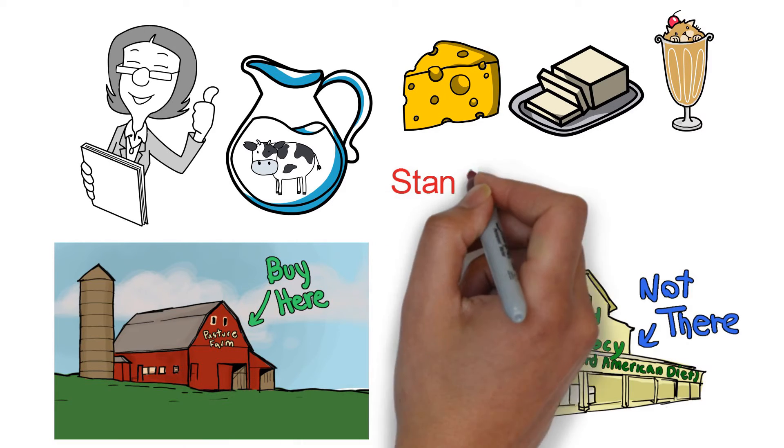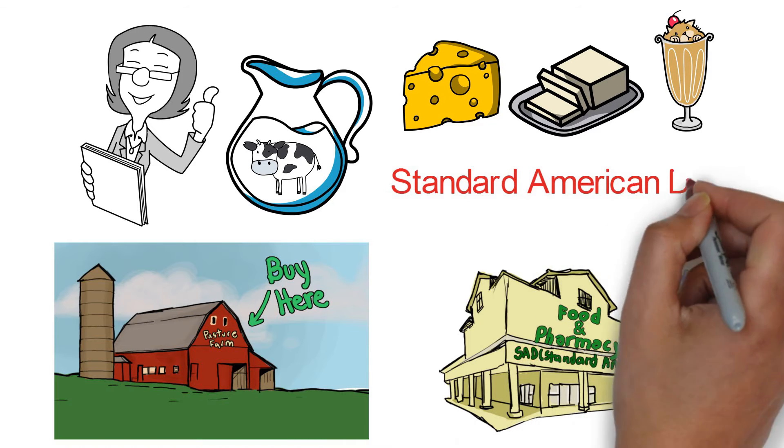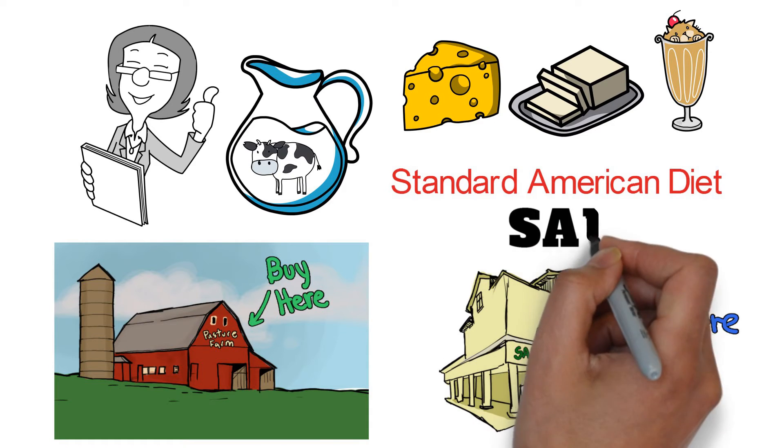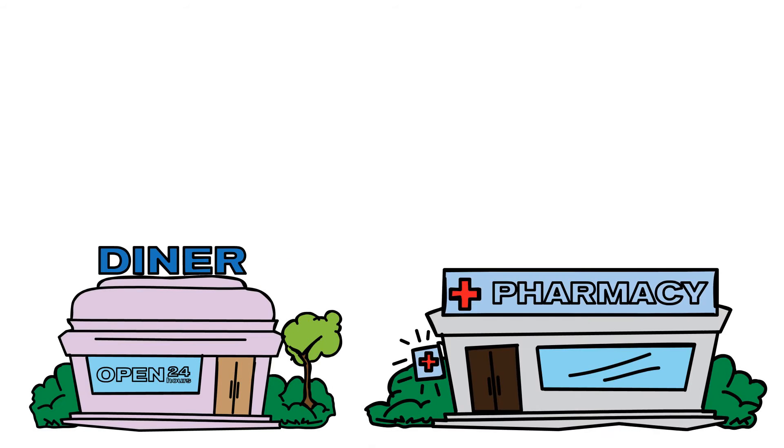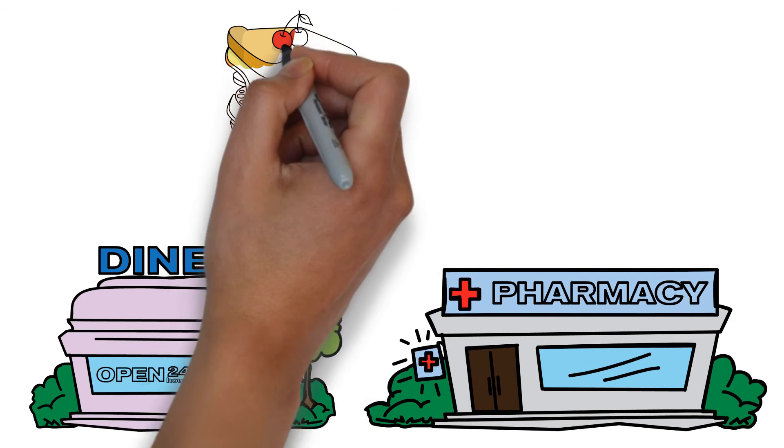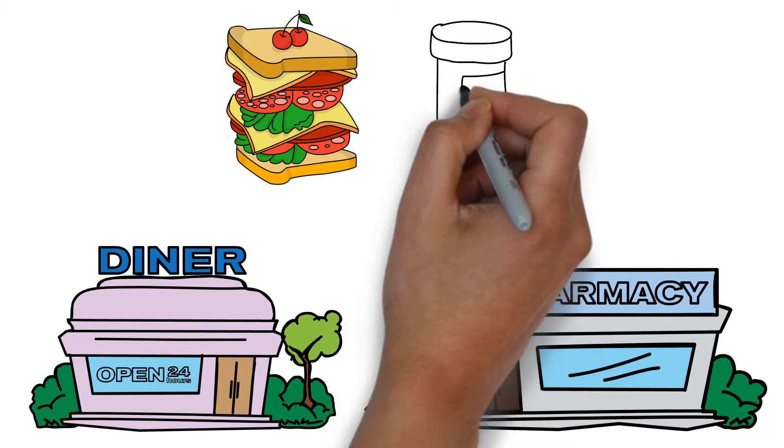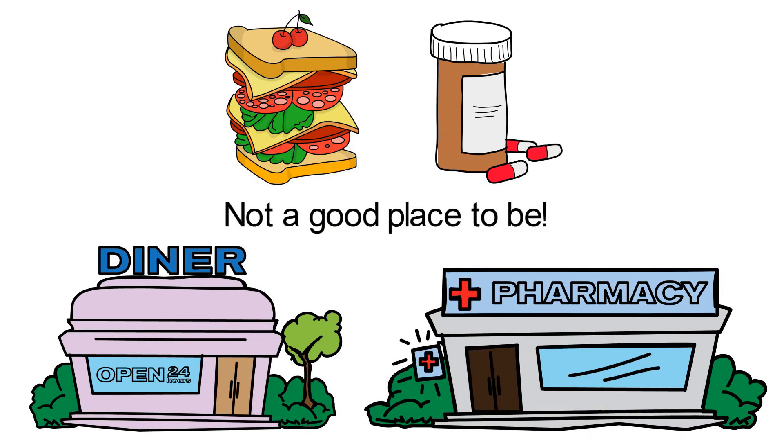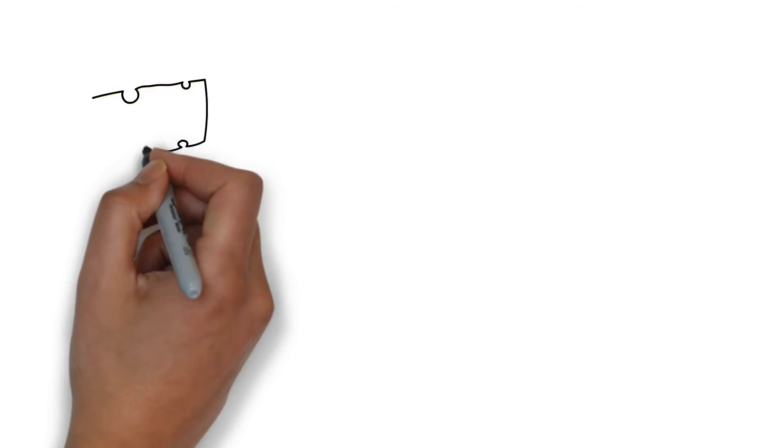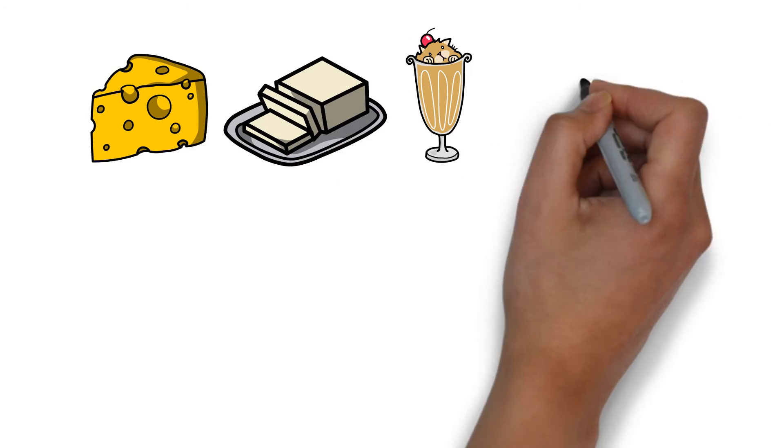And once you understand the wonderful benefits of raw milk and the associated products of cheese, butter, and of course ice cream, you'll never go back to the typical Standard American Diet type of grocery store again. Sad indeed. Take special note of the large food and pharmacy emblems on these stores: your chemically processed food on one aisle and your chemical drugs on the next. Not a good place to be.